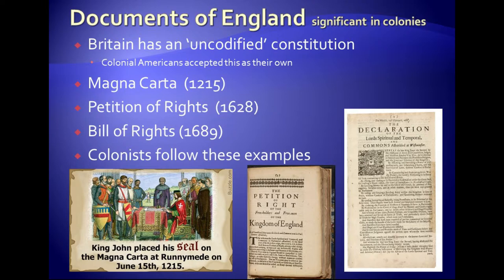So the colonists kept these documents as very significant to their form of government, following the examples of parliament. Every time there was a conflict between the colonists and the king, they would insist on a Petition of Rights or Bill of Rights, as we'll find out later. On this slide you can see images of those three important bills, as well as King John signing the Magna Carta at Runnymede on June 15, 1215.